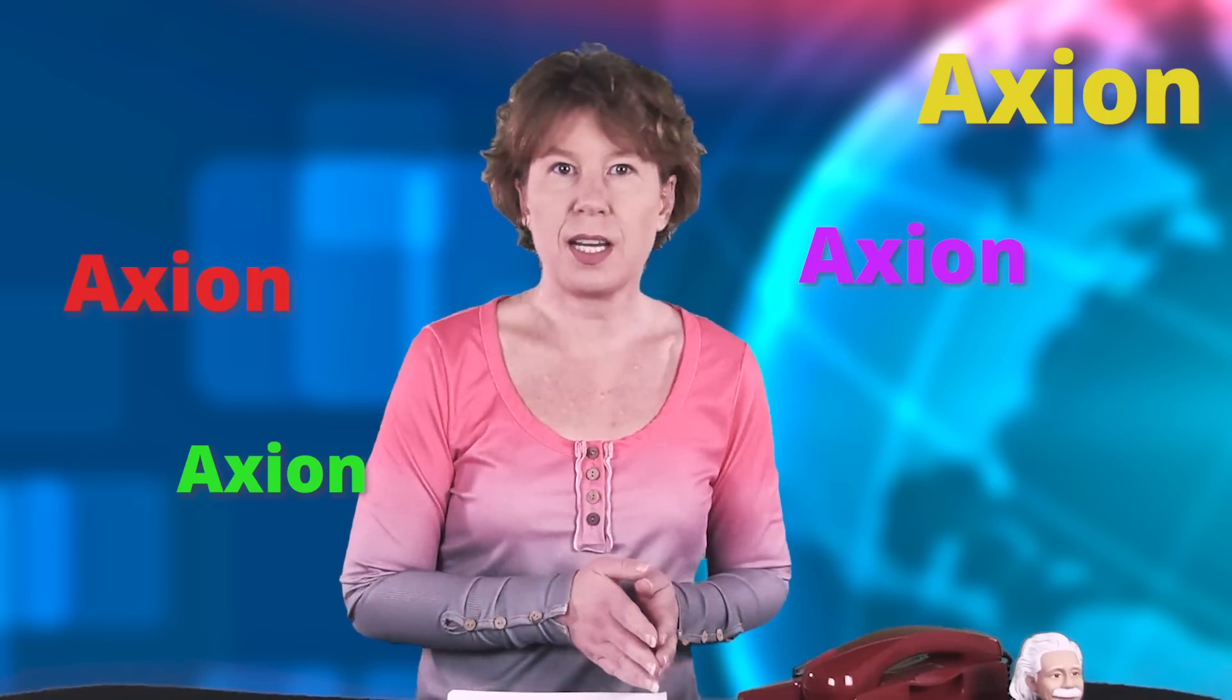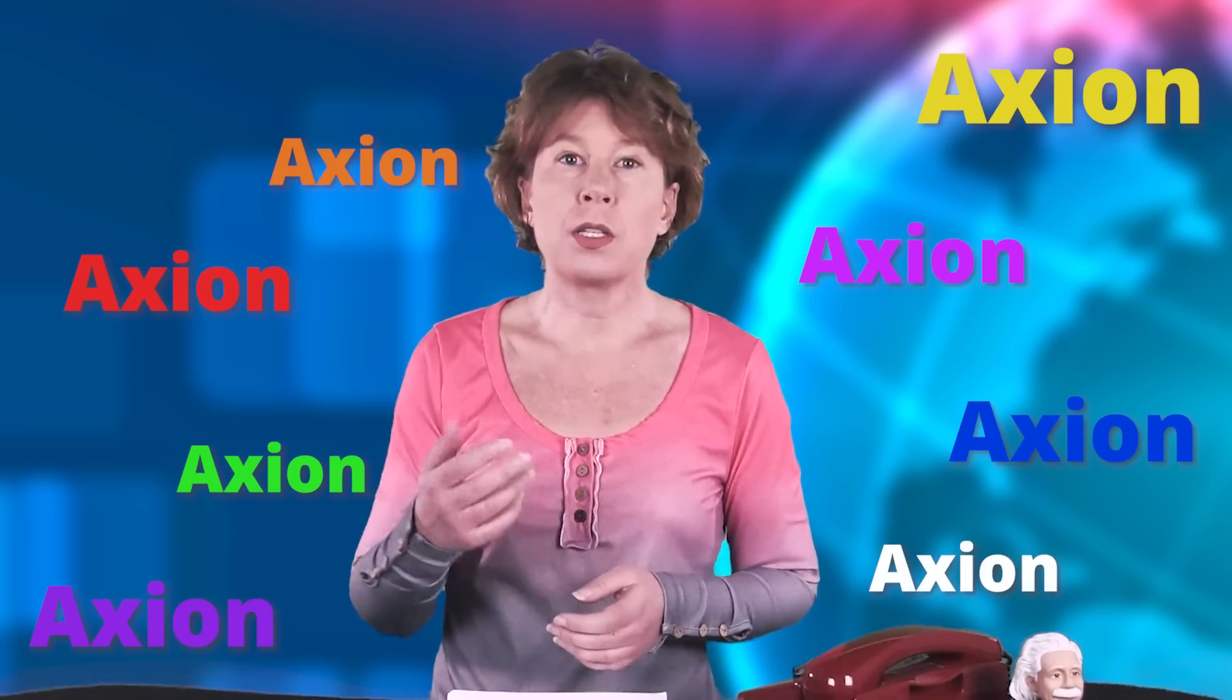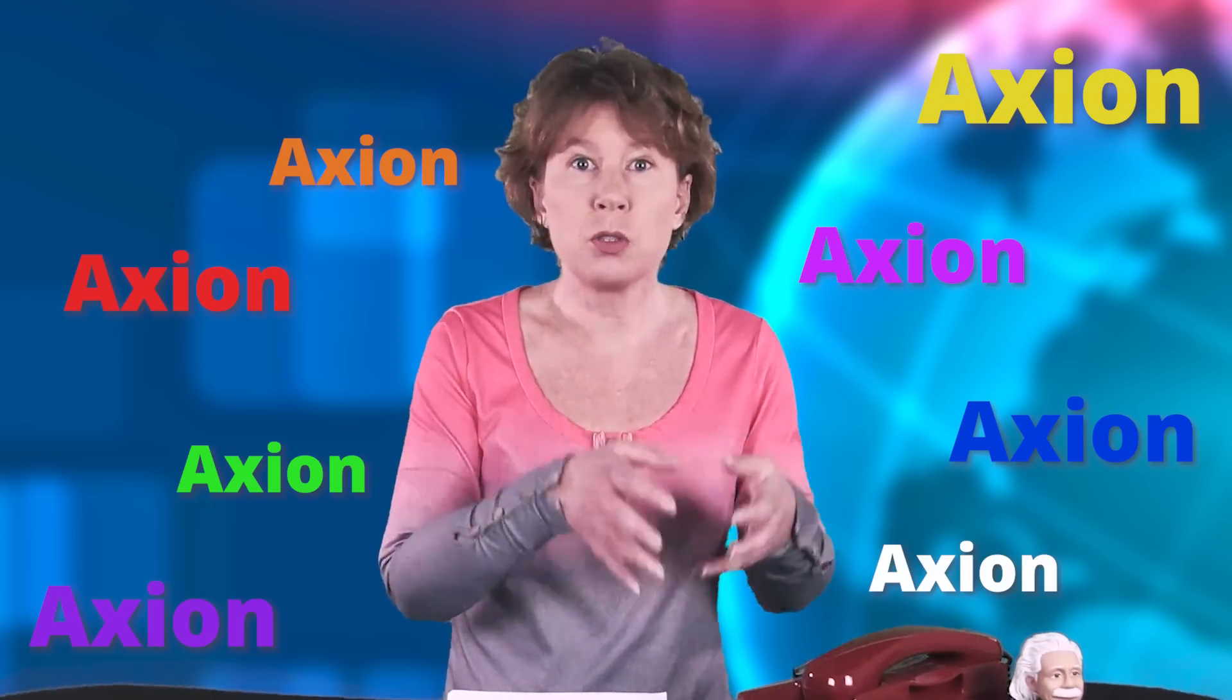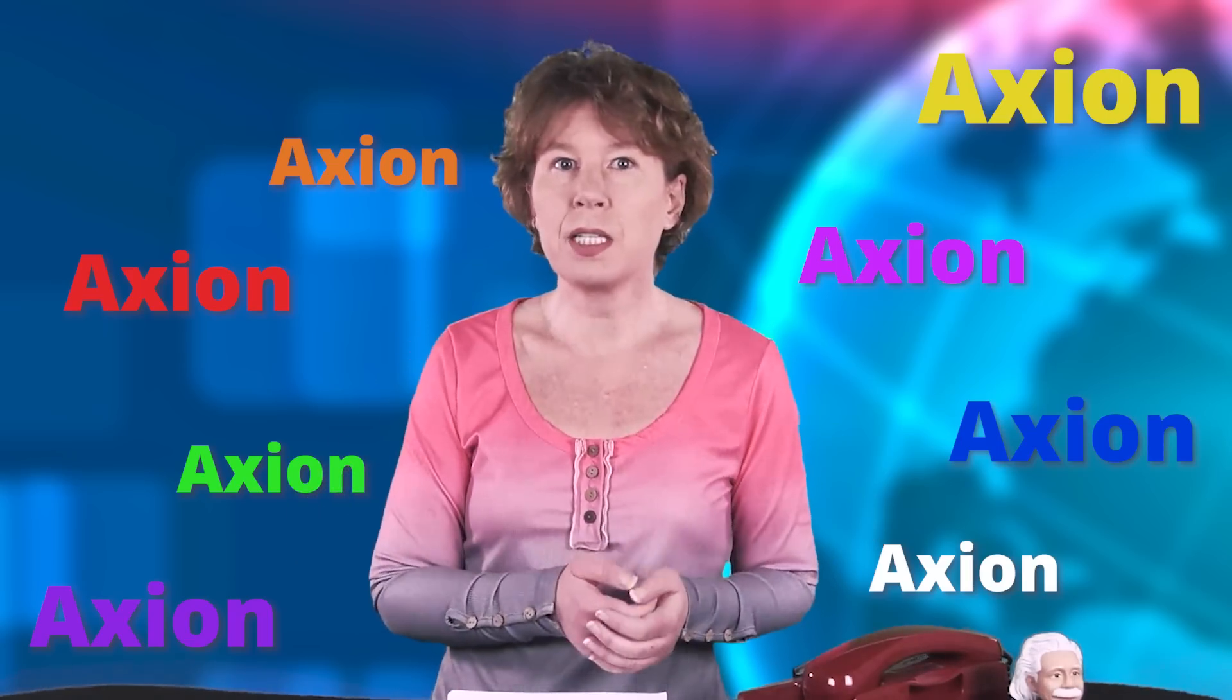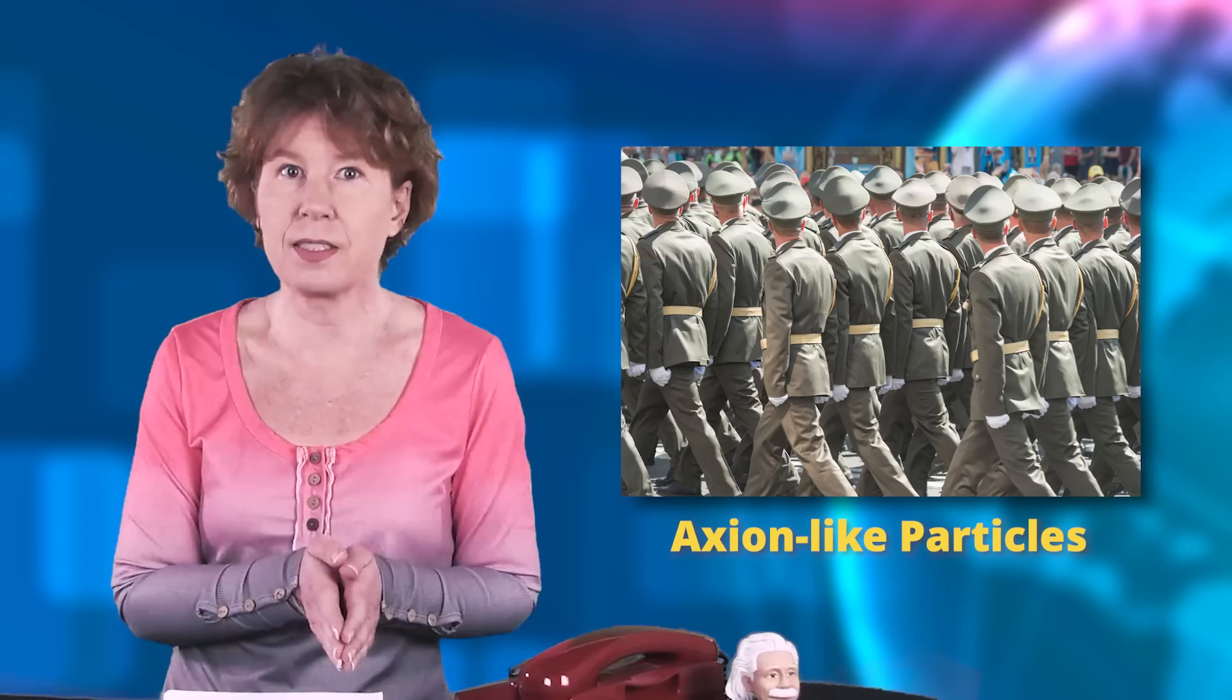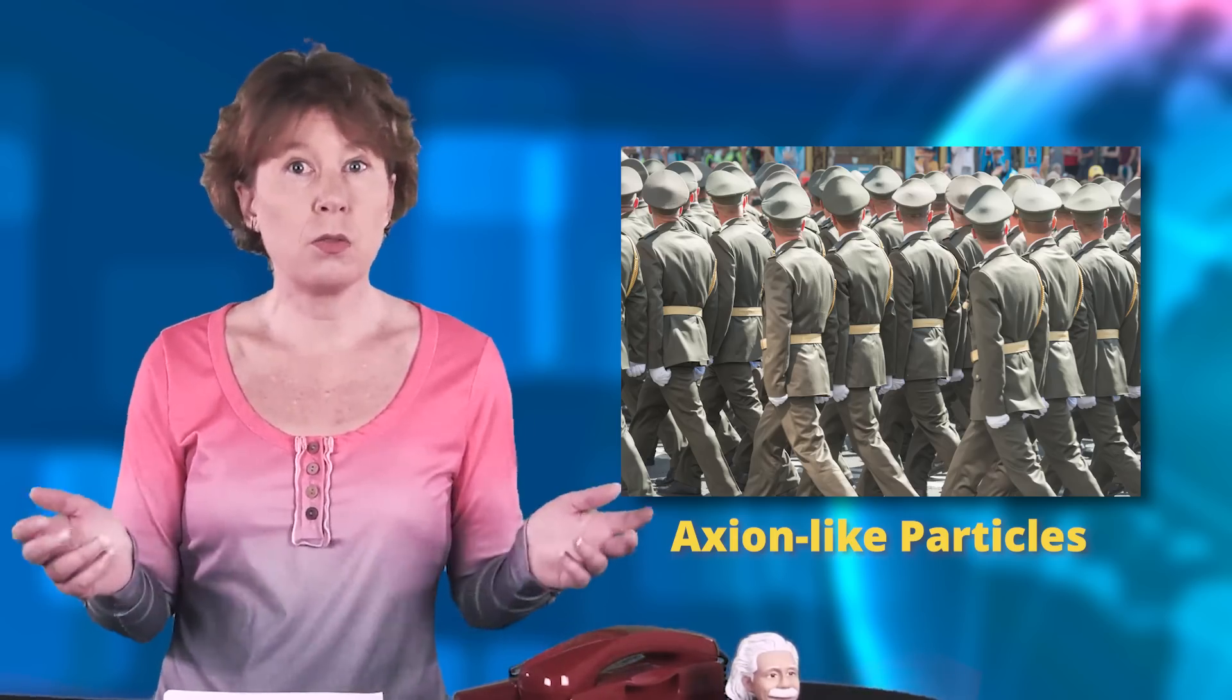physicists came up with various amendments to the original axion hypothesis that'd make the particle more difficult to detect. So not only was the axion invented for a non-scientific reason, it was to make a perfectly fine theory prettier, but after it had been ruled out, particle physicists made it even more unscientific by amending a theory that didn't explain anything. These new types of axions have now grown into an entire army called axion-like particles, and there are dozens of experiments looking for those particles. They continue to not find them.